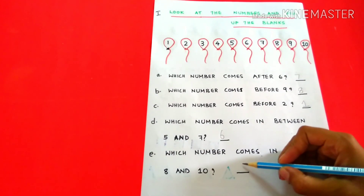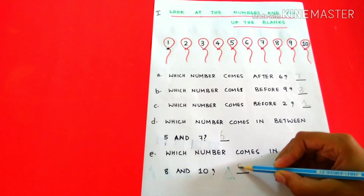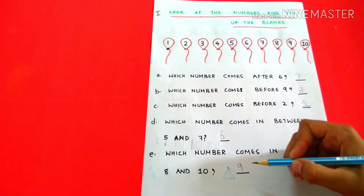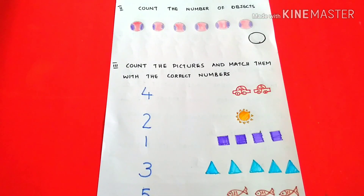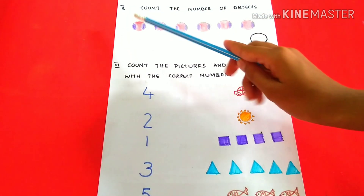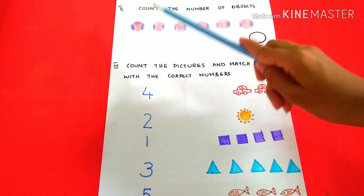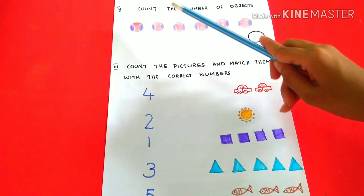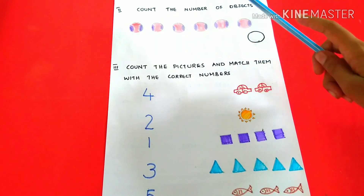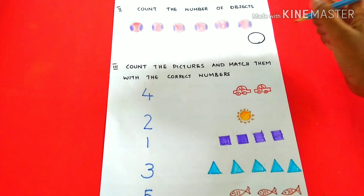Count the number of objects. 1, 2, 3, 4, 5, 6.